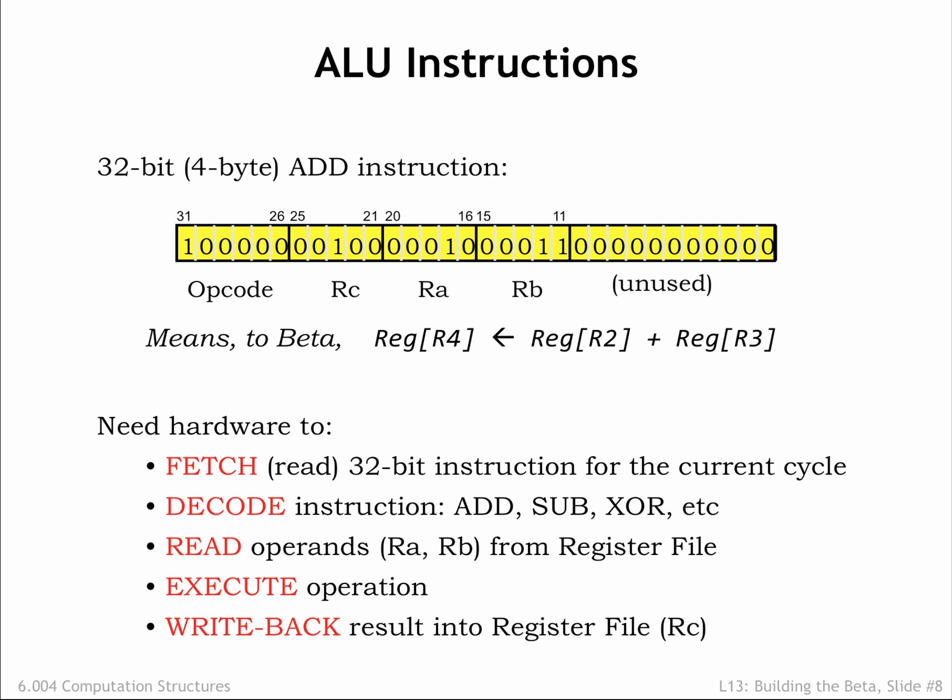The system's clock signal is connected to the register file and the PC register. At the rising edge of the clock, the new values computed during the execute phase are written to these registers. The rising clock edge thus marks the end of execution for the current instruction and the beginning of execution for the next instruction. The period of the clock — the time between rising clock edges — needs to be long enough to accommodate the cumulative propagation delay of the logic that implements the five steps described here.